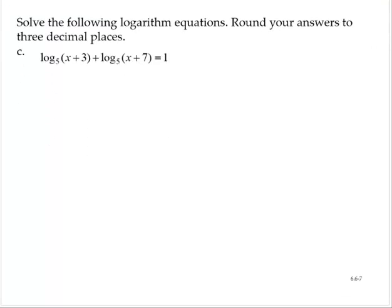Exercise C. Log base 5 of x plus 3 plus log base 5 of x plus 7 is equal to 1. I see that I'm adding logarithms with the same base. So that means I can write this as a single logarithm, base 5, of x plus 3 times x plus 7. And it's still equal to 1.